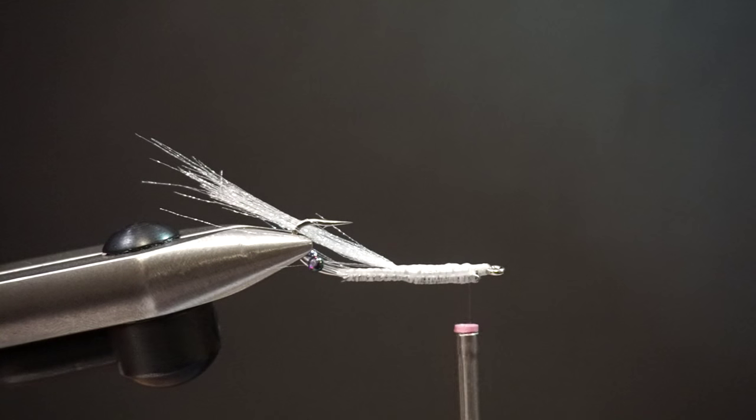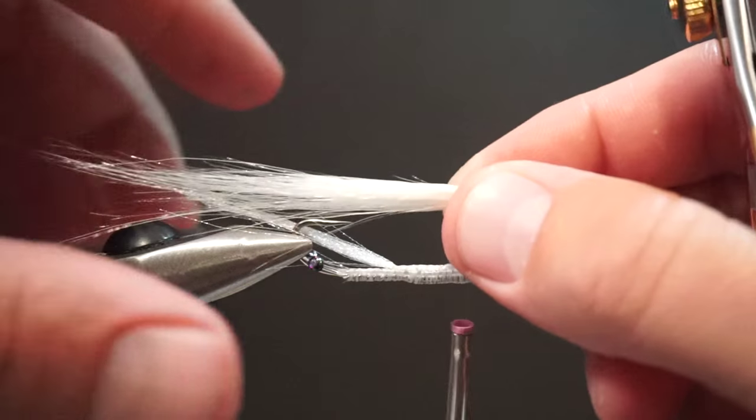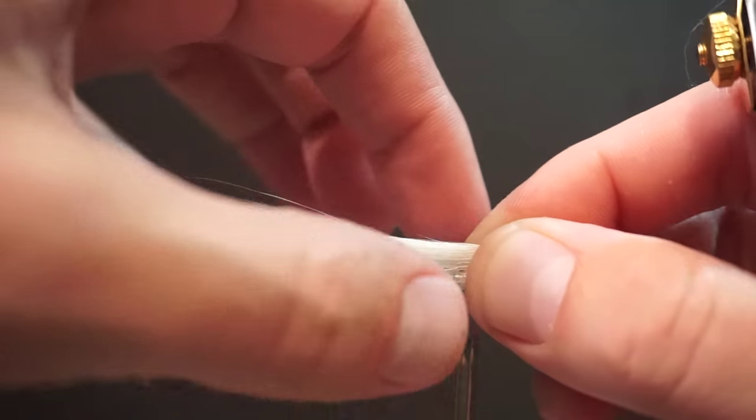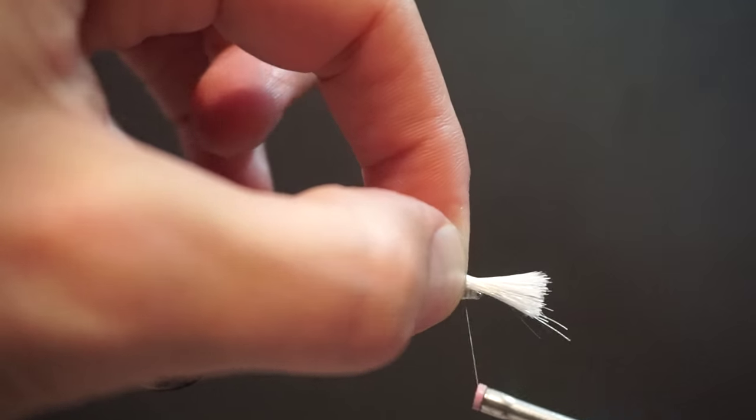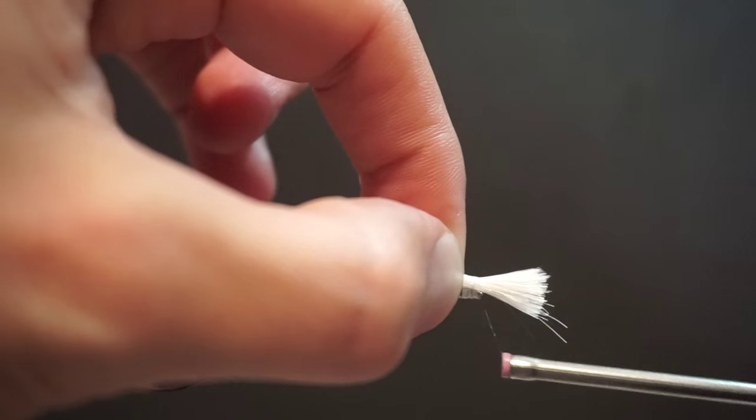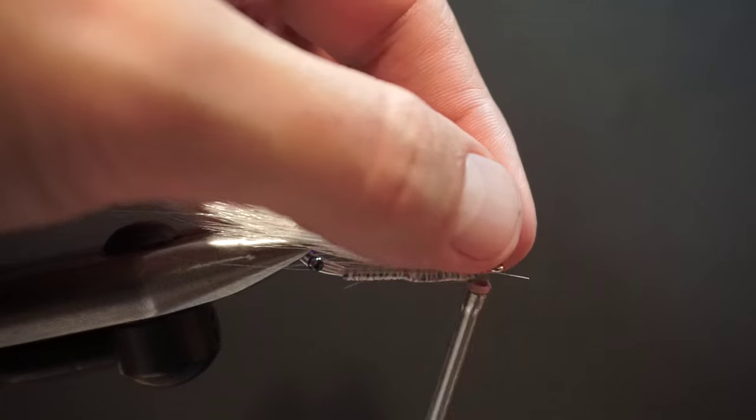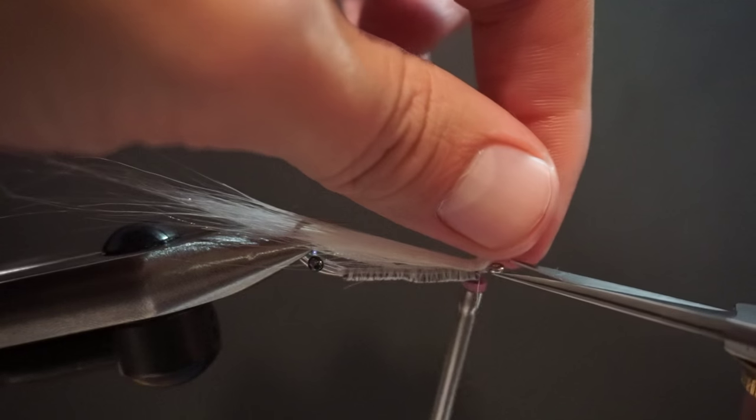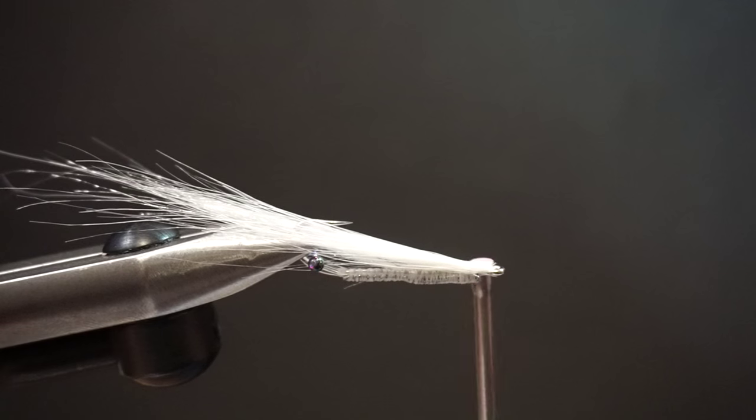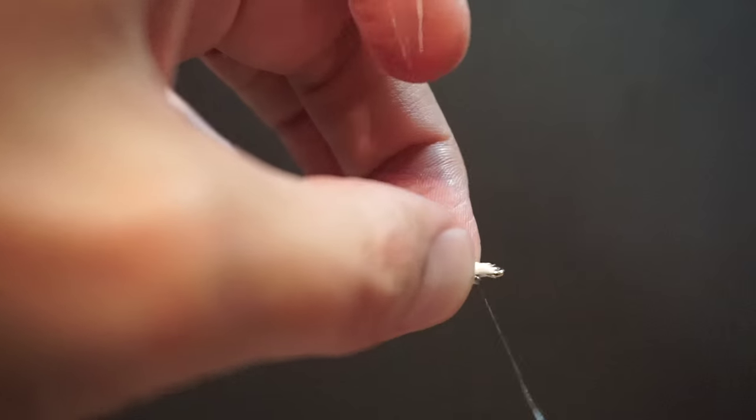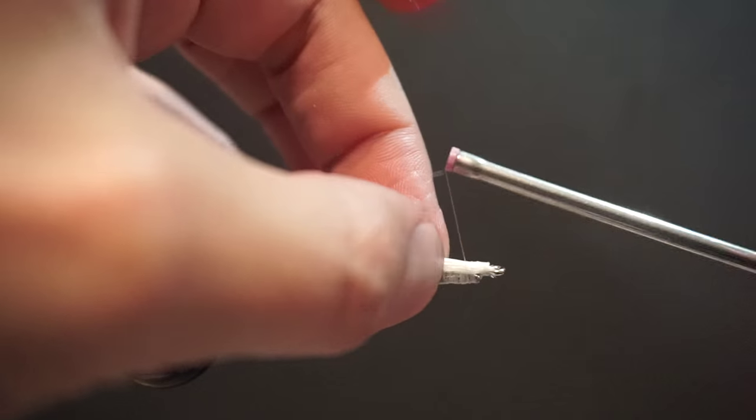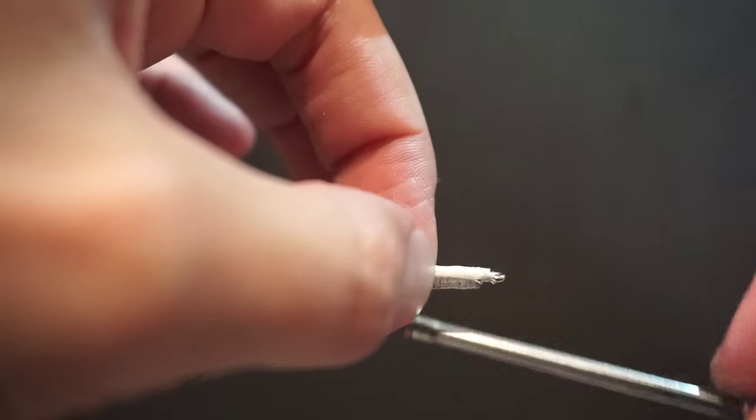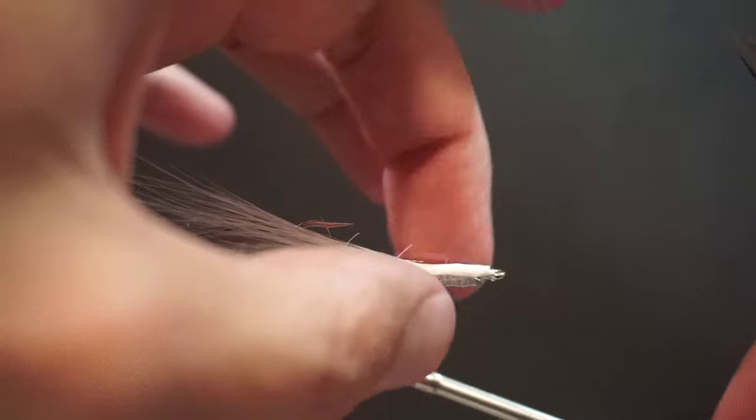Next material we're going to put in here is some white cashmere goat. This is another great material for a realistic look. It breathes really well under water. When you strip that fly and pause, it kind of keeps moving almost like marabou. But it does a great job of capturing light and really looking shrimpy.